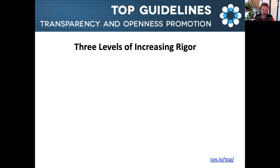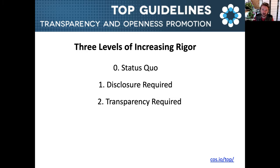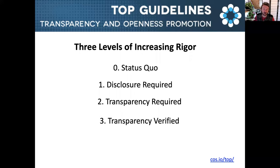Each of the eight standards of the TOP guidelines can be applied in three levels of increasing rigor. It starts out with not-compliant policies that generally represent the status quo. The first compliant level is a disclosure requirement — articles must state whether or not a practice occurred. Level two is a mandate for transparency with exceptions permitted. And level three is a verification step that the transparency practice was taken as specified.